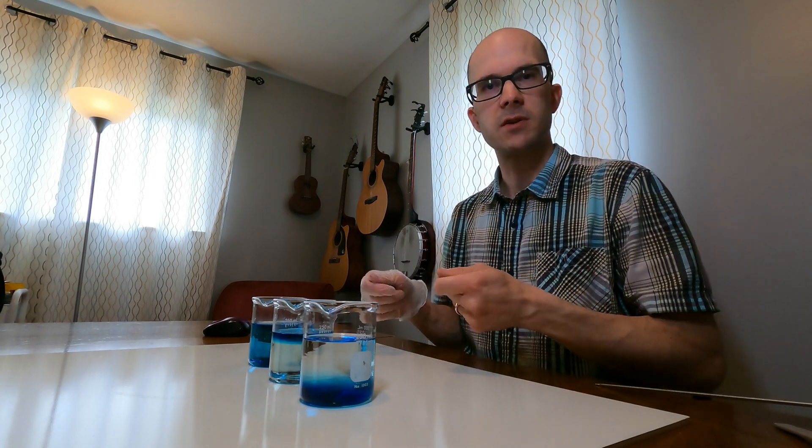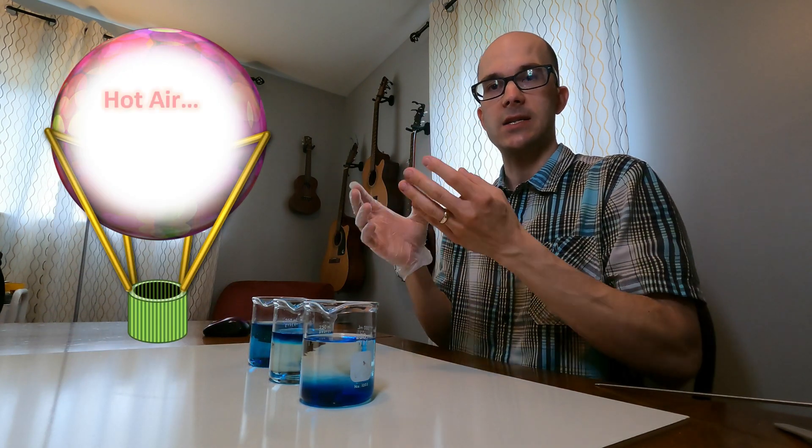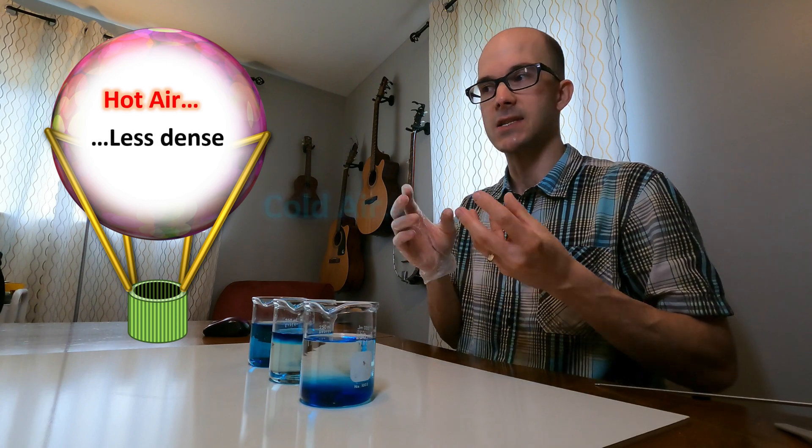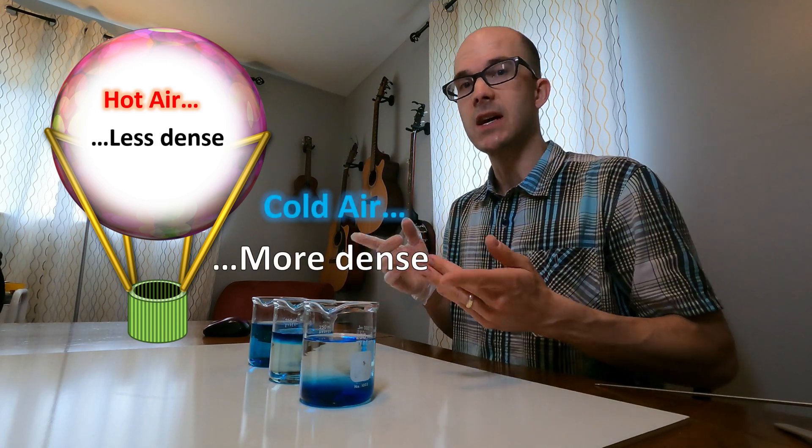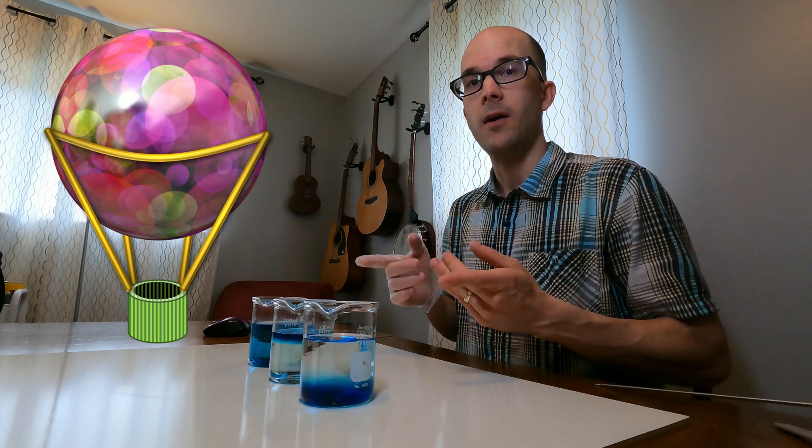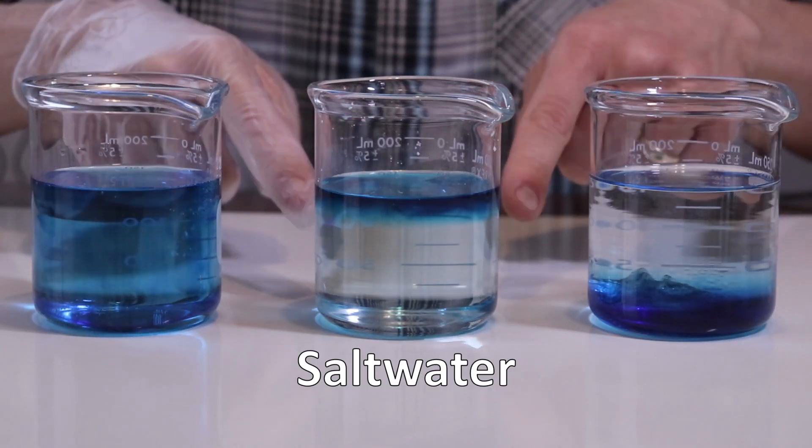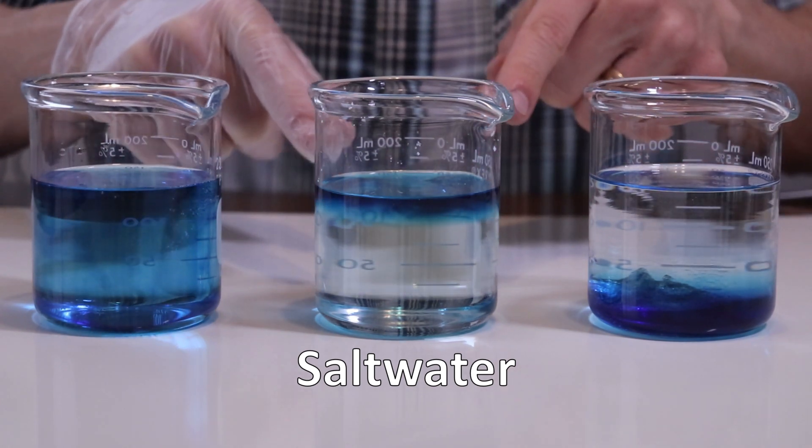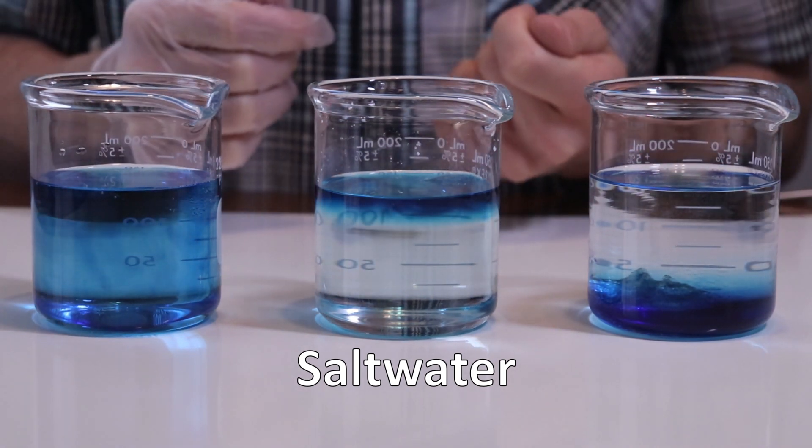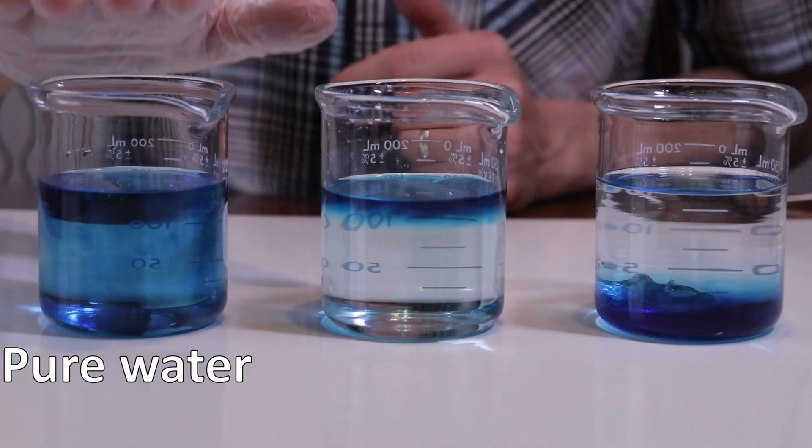Normally, warmer things do float as long as we're talking about the same medium. For instance, a hot air balloon floats because the air inside is hotter and therefore less dense than the surrounding cold air. Same substance, different temperature, therefore different density. What we find happening in the salt water is that the salt water is more dense than the melt water, even though it's also warmer.